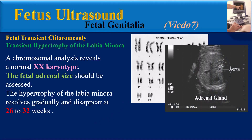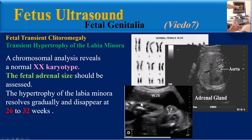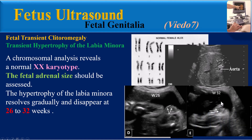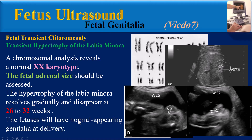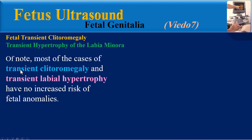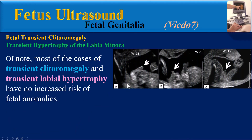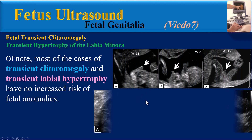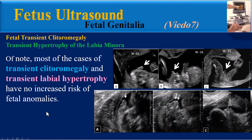Chromosomal analysis reveals a normal XX karyotype. The fetal adrenal size should be assessed. The hypertrophy of the labia minora resolves gradually and disappears at 26 to 32 weeks. This image from the same fetus at 26 weeks gestation shows normal appearing labia, and at 32 weeks we can see normal appearing female external genitalia with a triple line appearance. The fetuses will have normal appearing genitalia at delivery.